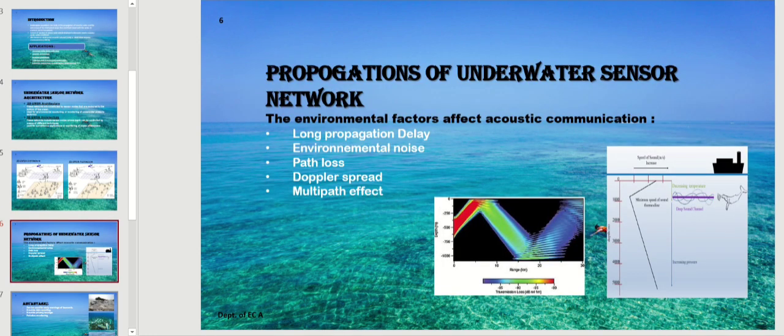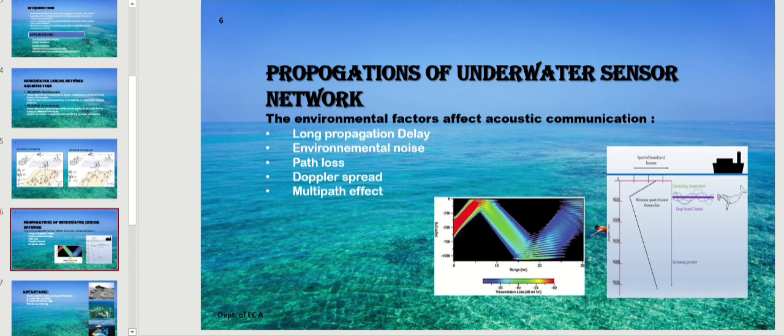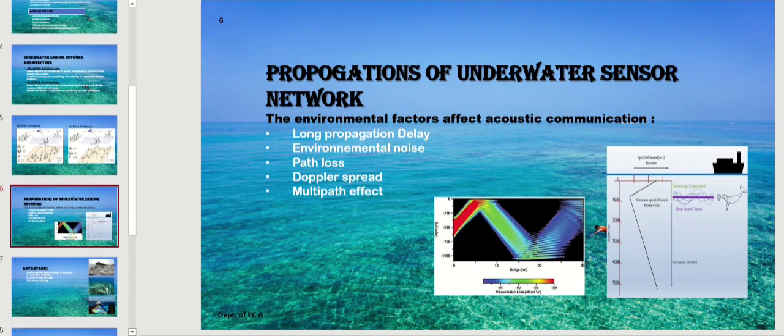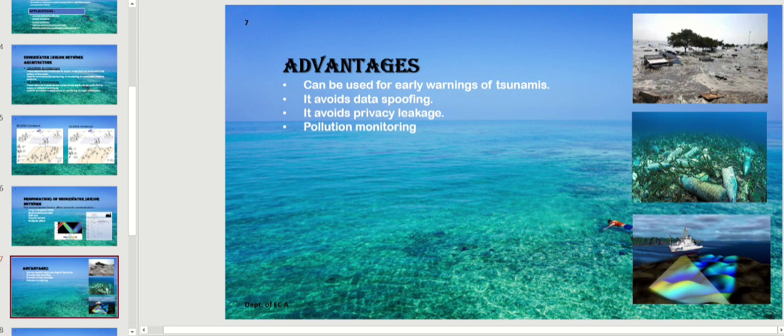There are many environmental factors that affect acoustic communication. They are: long propagation delay, environmental noise, path loss, multipath effect. These are some of the key environmental factors affecting underwater acoustic sensor networks.